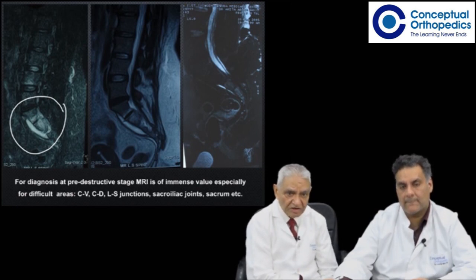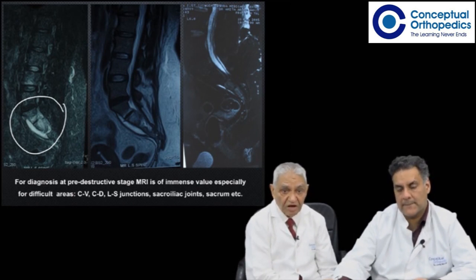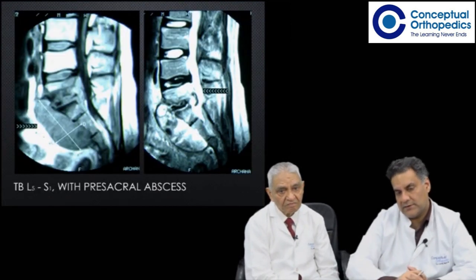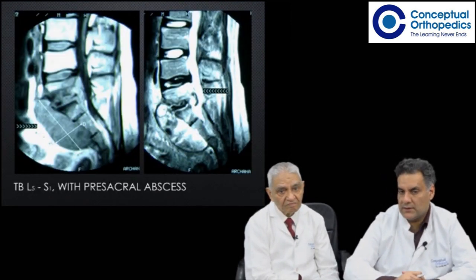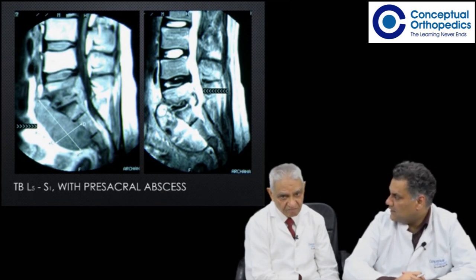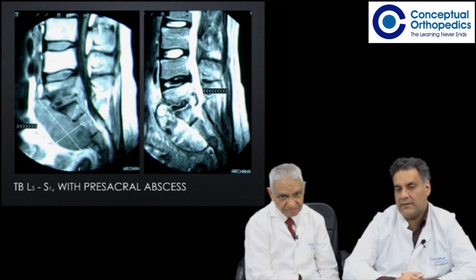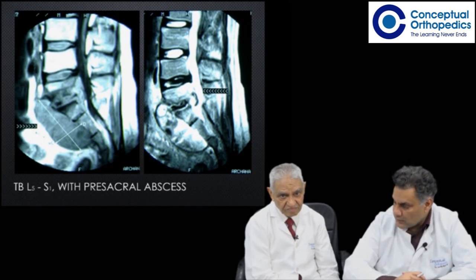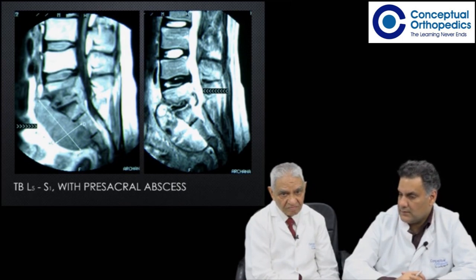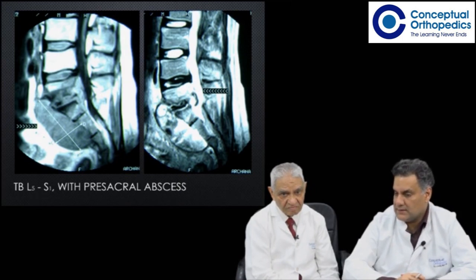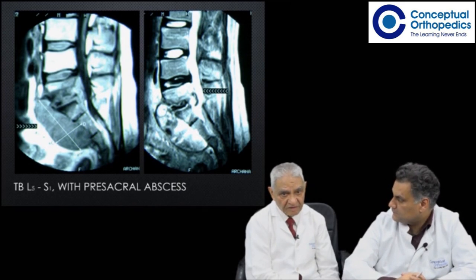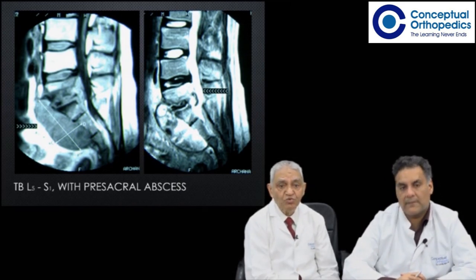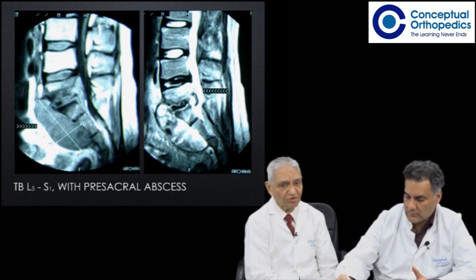Junctional areas — cervicodorsal, craniovertebral, sacral — are very difficult to diagnose based on X-rays alone. Here is an MRI showing tuberculosis of such a junctional area. Remember that TB will always have some soft tissue component along with fluid, which helps differentiate it from other diseases affecting this area. One can see a huge pre-sacral abscess or collection clearly visible on this image.